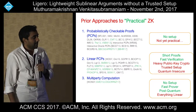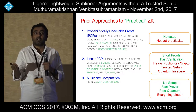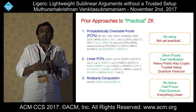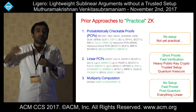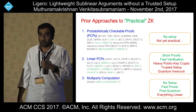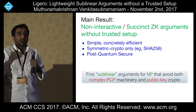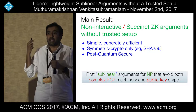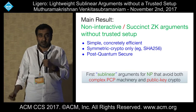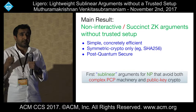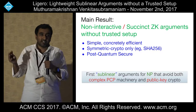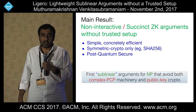The last category does not require setup, has good performance in terms of prover, and it's post-quantum. But everything is linear, including the proof length, which scales linearly in the statement you want to prove. Our main result is that we get a non-interactive, succinct argument without a trusted setup. It's simple, concretely efficient, uses only symmetric key crypto, and it's post-quantum secure.